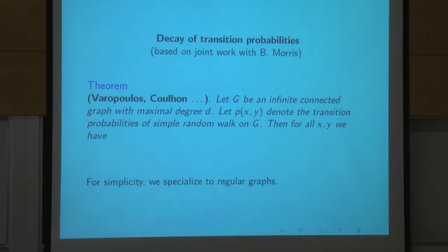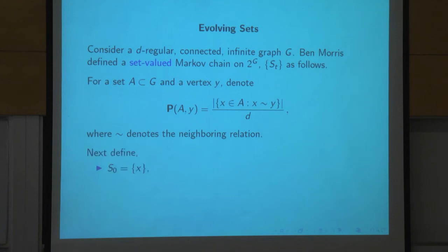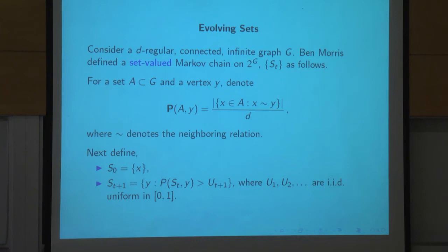For simplicity I'll focus on regular graphs, though this works more generally. We want to prove a bound: p_t(x,y) is bounded by constant over root t. Recall the evolving set process — in the regular case, the parameter p(A,y) is the number of x in A which are neighbors of y, divided by d. So this is the fraction of neighbors of y that are in A, and that's the probability of jumping from y to A.